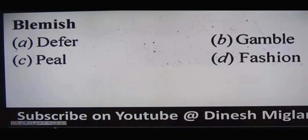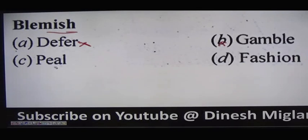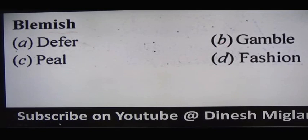Next word: 'blemish.' Blemish is a spot which spoils the appearance of something — like pimples which spoil one's appearance. Option A is 'defer,' meaning to postpone or delay things — not our answer. Option B is 'gamble,' meaning to bet — not our answer. Option C is 'peal,' meaning a loud ringing of bells — not our answer. Blemish means something which spoils the look, and 'fashion' means something which improves the look or makes you look stylish. So fashion is the antonym of blemish.